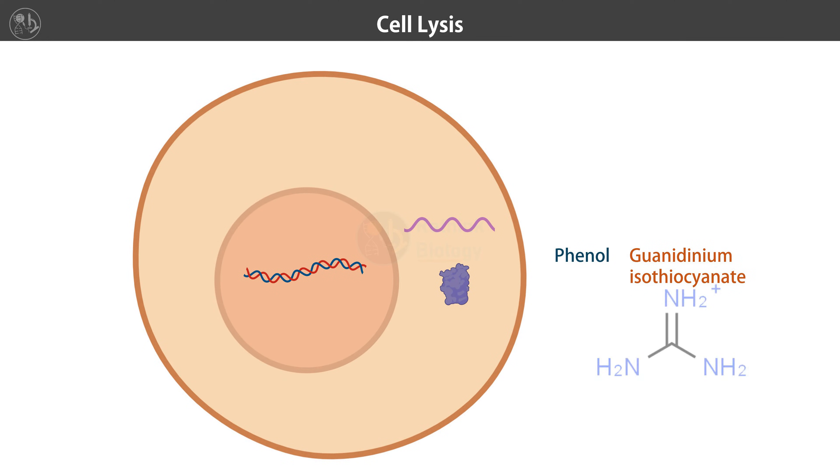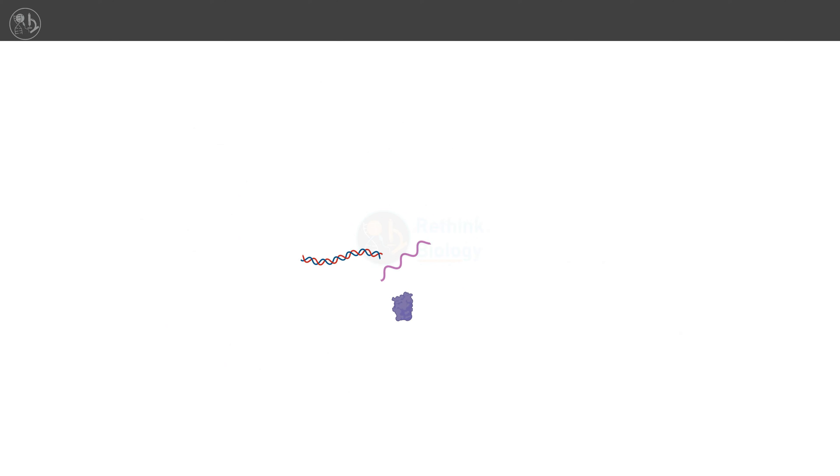isothiocyanate. Guanidinium salts are positively charged molecules that can disrupt the hydrogen bonds that stabilize the structures of proteins, DNA, and RNA. This disrupts the organization within the cell, causing breakdown of cellular membrane and denaturing proteins to release RNA.